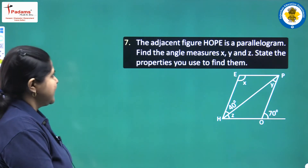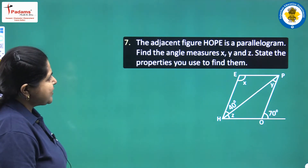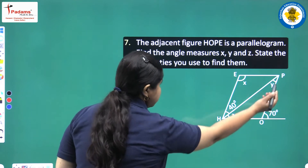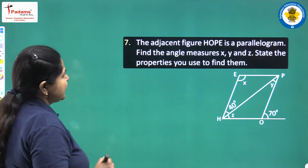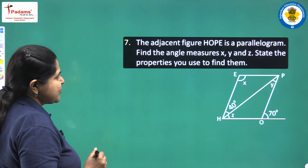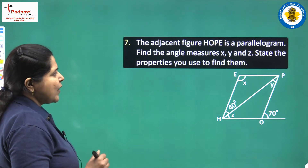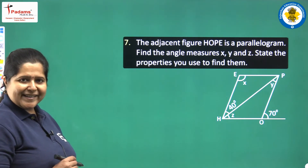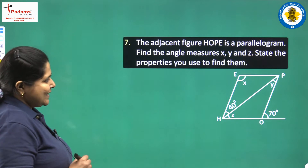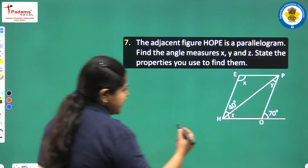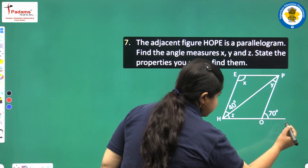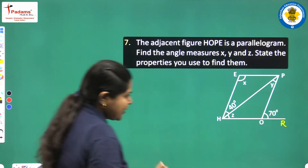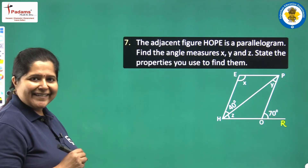Here in the adjacent figure, HOPE is a parallelogram. Find the angle measures X, Y, and Z, and state the properties you use to find them. First of all, let us name this particular point as R. Now it will be easy to name the angles.